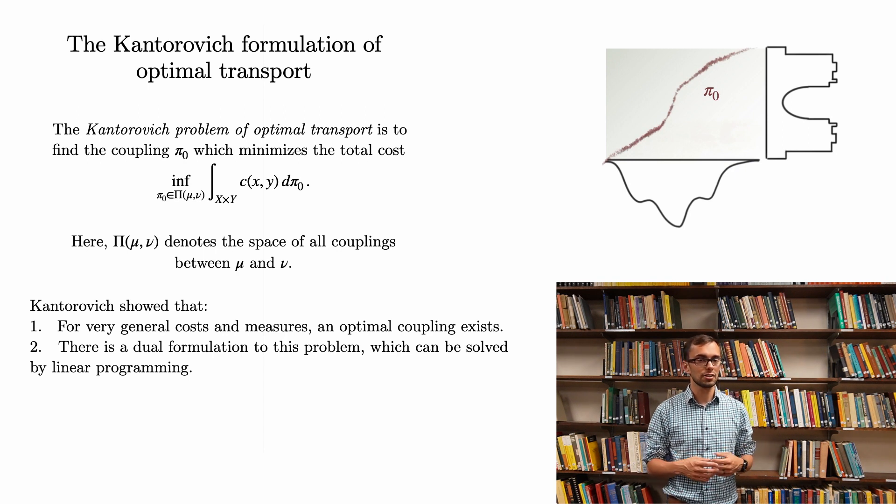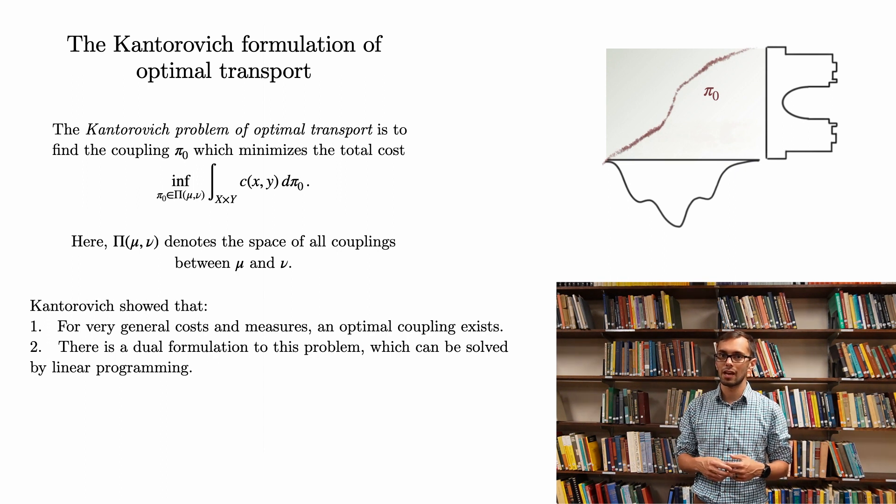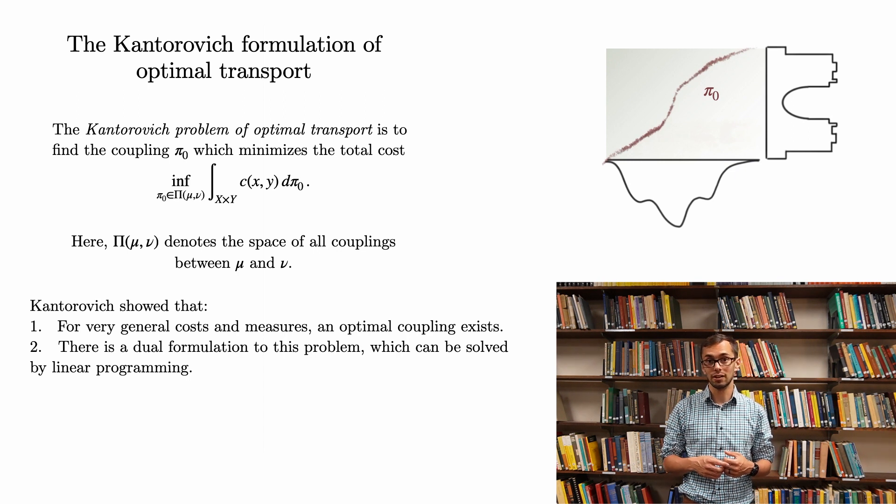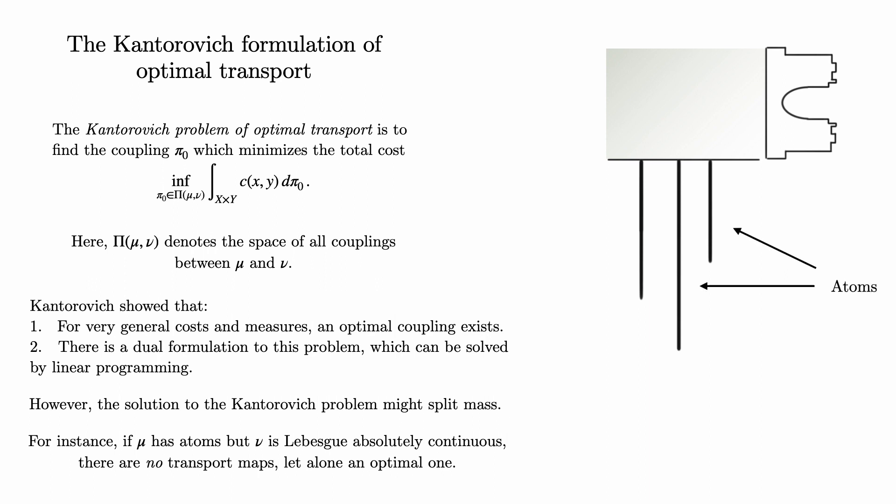Shortly after Kantorovich introduced his work, the simplex algorithm was discovered by George Dantzig, which gave a practical algorithm for solving linear programs. And for his insights, Kantorovich won a Nobel Prize in 1975. However, in general, the solution to the Kantorovich problem may split mass, and so not be a solution to the Monge problem. For instance, if mu has atoms, but nu is Lebesgue absolutely continuous, there will be a solution to the Kantorovich problem, but there are no transport maps at all.